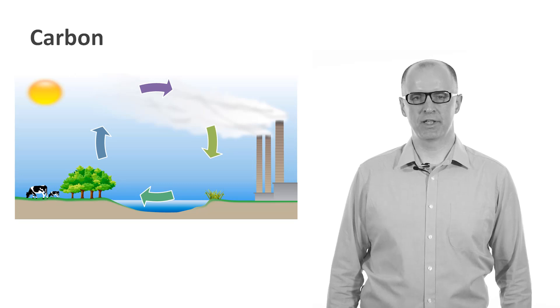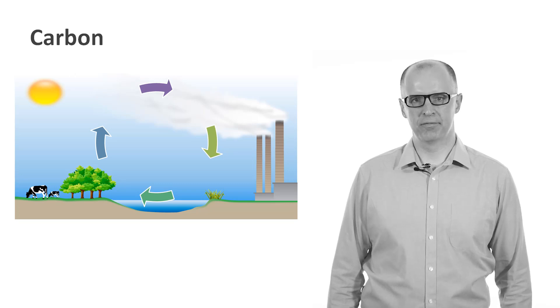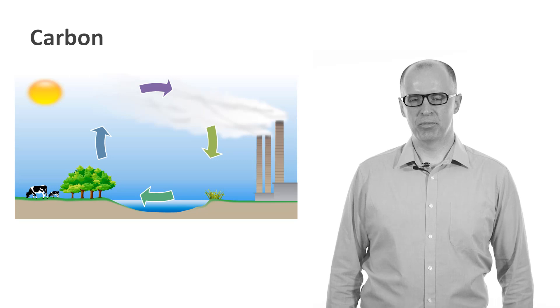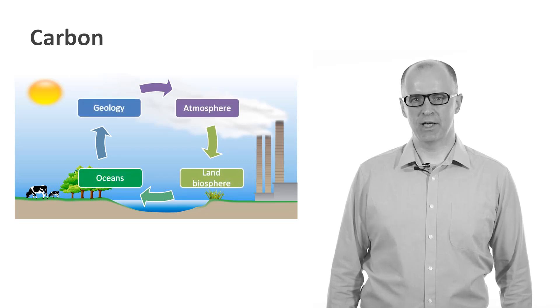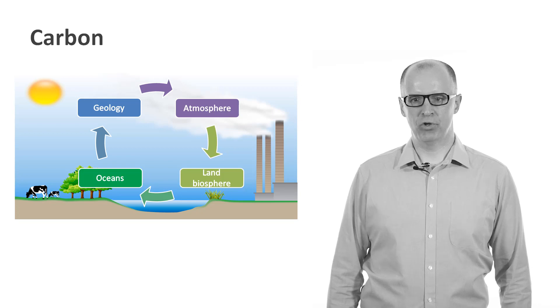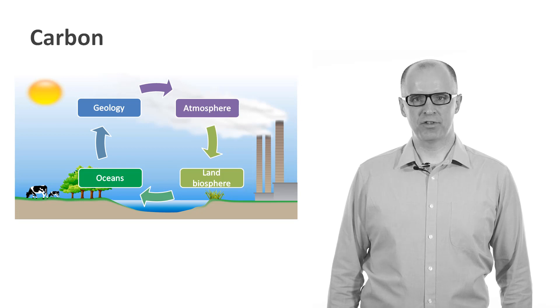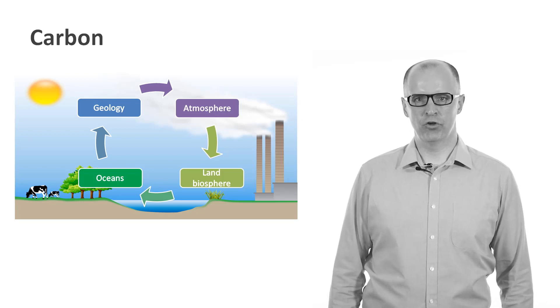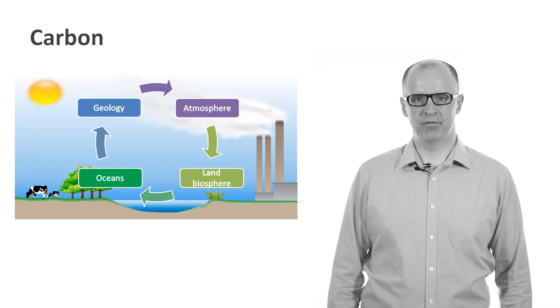Carbon, for example, is a key element that is required for life. It's cycled between four stores: atmosphere, land biosphere, oceans and geology, by processes that cause its entry and exit between these key stores. Key processes include photosynthesis, respiration, food chain uptake and volcanic activity.